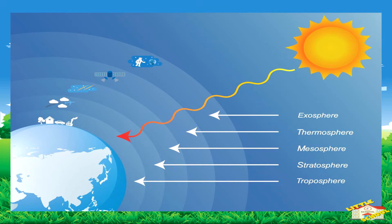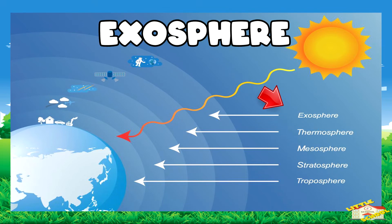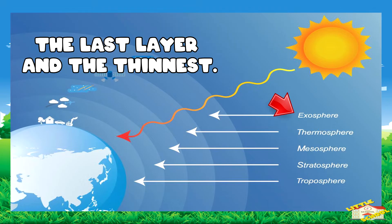Let's go over the layers of the Earth's atmosphere. The Earth's atmosphere is divided up into five major layers. The exosphere is the last layer and the thinnest.